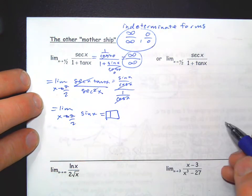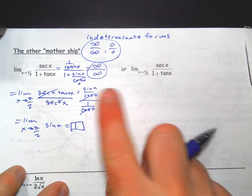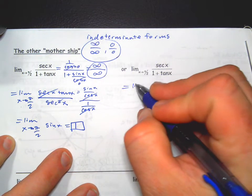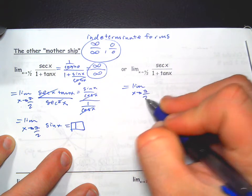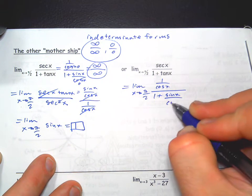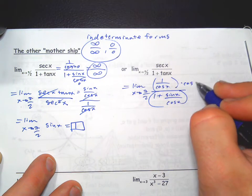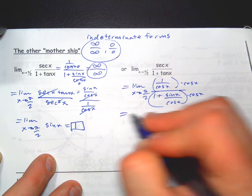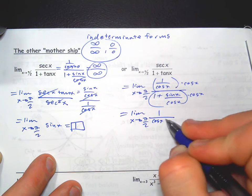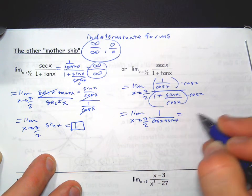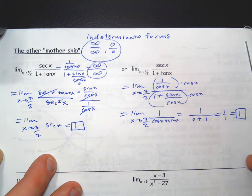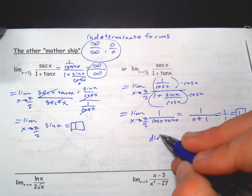The same problem can be solved by simplifying first, without L'Hôpital's Rule. Secant is 1/cosine and tangent is sine/cosine, so we multiply top and bottom by cosine to get the limit as x→π/2 of 1/(cosine x + sine x). Plugging in π/2: cosine(π/2)=0 and sine(π/2)=1, giving 1/1=1. So we didn't need L'Hôpital's Rule here. Just something to keep in mind — there might be an easier way, and L'Hôpital's Rule is not always the magic easy solution.